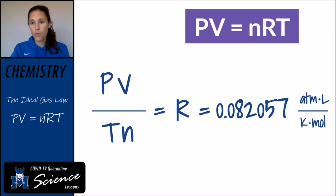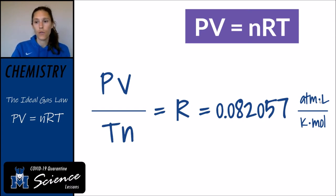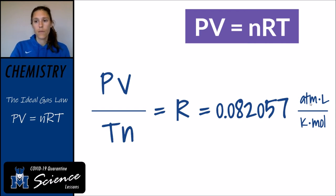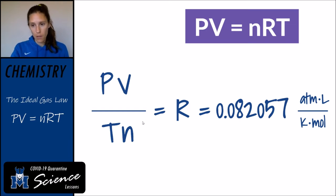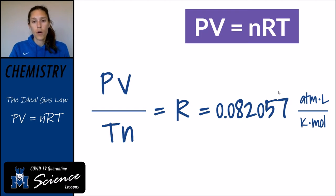Those units don't get confusing — they just come from how we calculated R. The R units come from the fact that you took pressure times volume divided by Kelvin times the number of moles.